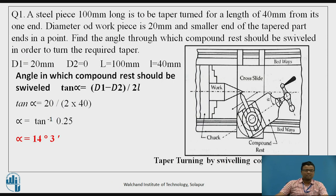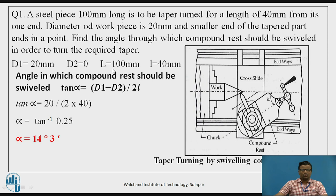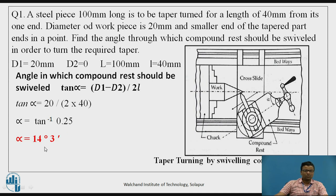Numerical example: A steel piece 100 mm long is taper-turned for a length of 40 mm from one end. The diameter of the workpiece is 20 mm and the smaller end tapers to a point. Find the angle through which the compound rest should be swivelled. Given: d1 = 20 mm, d2 = 0, L = 100 mm, l = 40 mm. Using tan α = (d1 − d2) / 2L, substituting values gives α = 14 degrees.